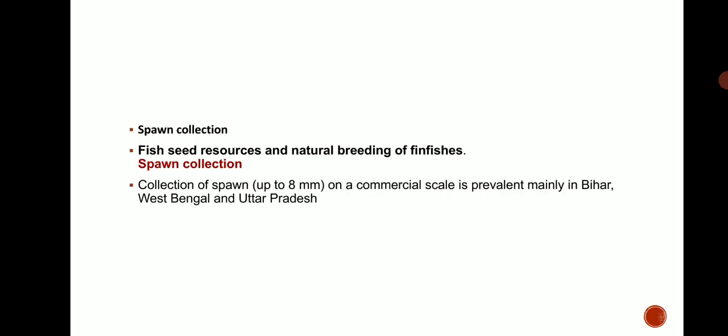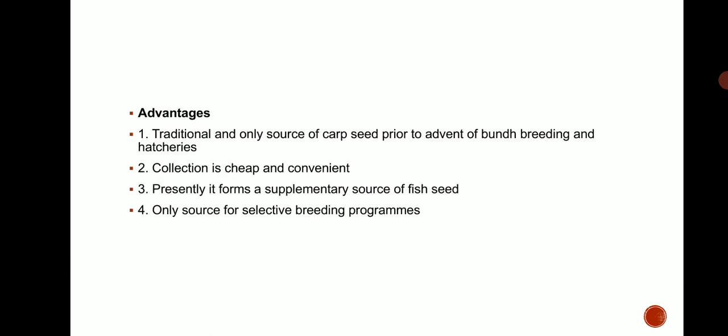Spawn Collection: Fish seed resource and the natural breeding of fine fishes. Collection of spawn up to 8 mm on a commercial scale, prevalent mainly in Bihar, West Bengal, and Uttar Pradesh.